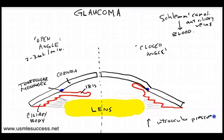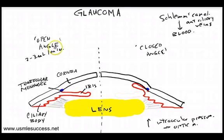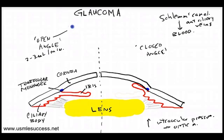Increased intraocular pressure can cause damage to structures, and more importantly, it can cause non-reversible damage to the optic nerve. Open angle glaucoma is by far more common, seen in 90% of cases, whereas closed angle glaucoma is only seen approximately 10% of the time.